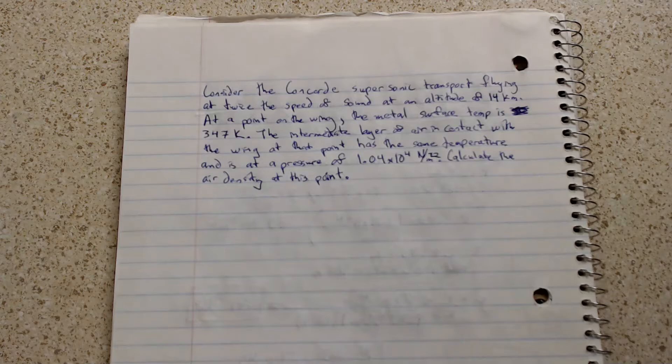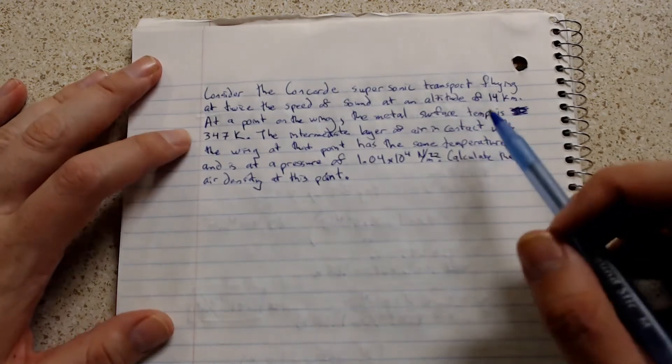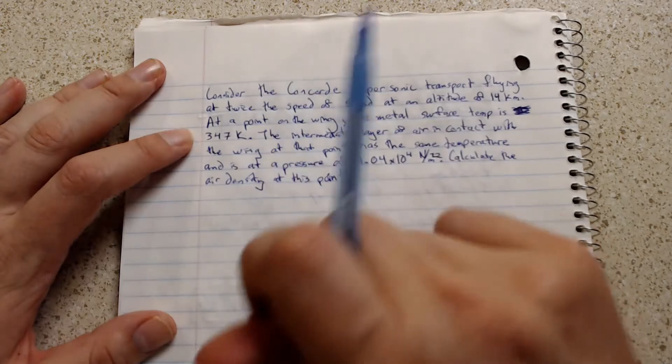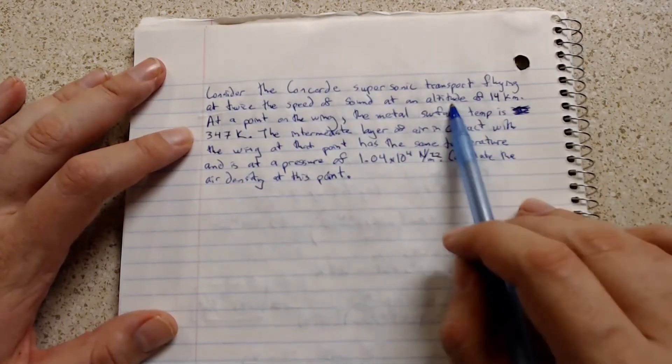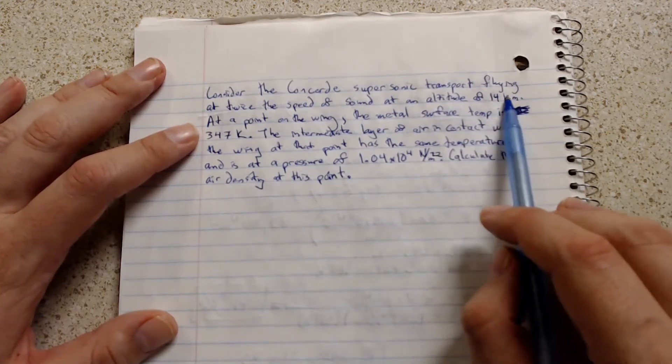This is one of those tricky questions. Because if you read the first sentence and you're rushing because you're in a test, you're going to see twice the speed of sound. I see an altitude here. I'm going to go look at my standard atmosphere tables to figure out my values at that height.